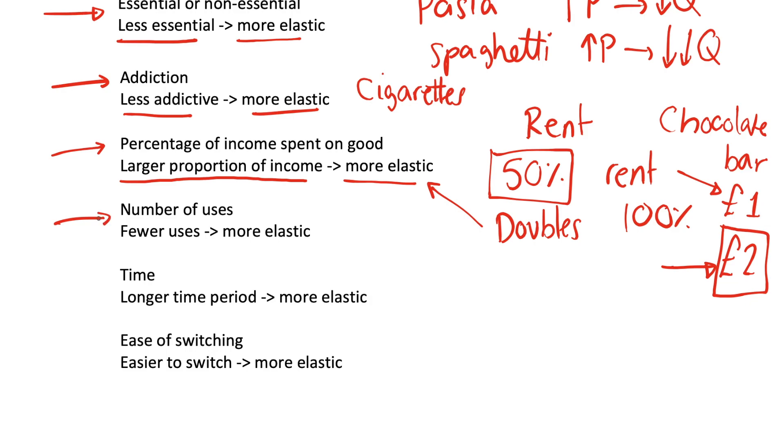Another one will be the number of uses. So if a good has not very many uses and it increases in price, you're more likely to stop buying it. However, if it's a good that has lots and lots of uses, then you may want to keep paying the higher price because that good is very useful to you. We might think of something like milk. If the price of milk increases,